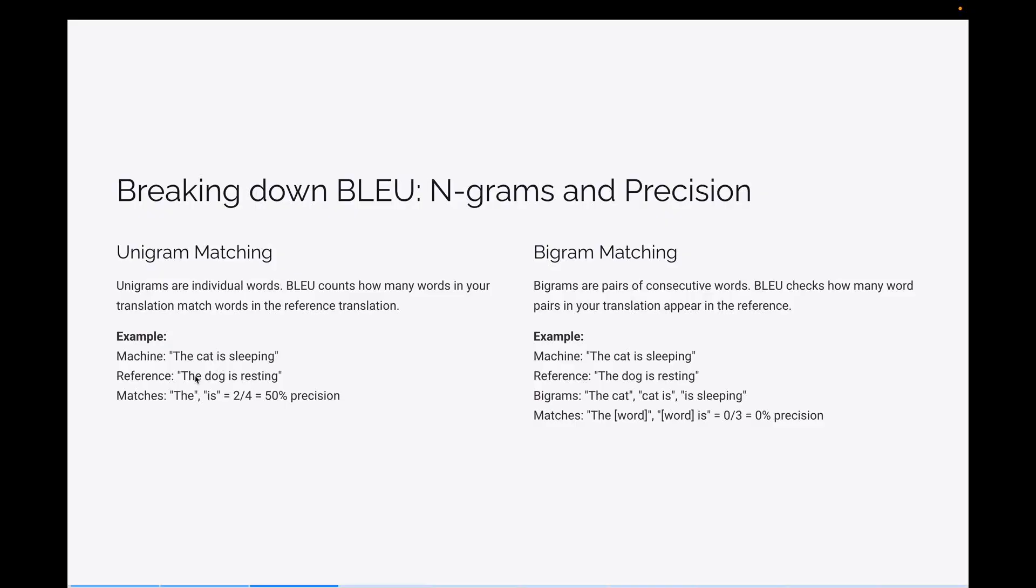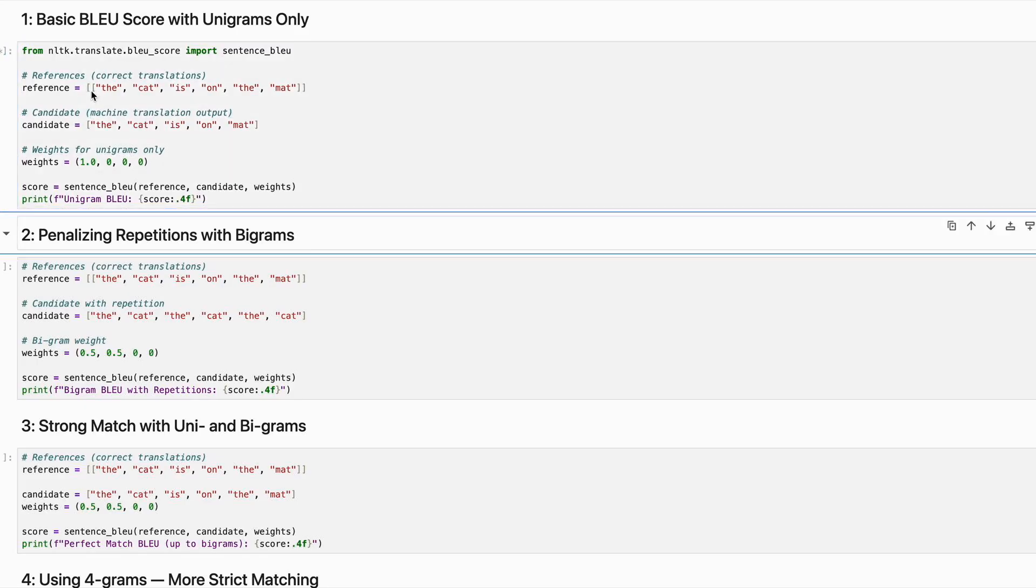So this is very useful. Here I have five different examples. First one is the unigram model alone. It is importing nltk sentence BLEU.